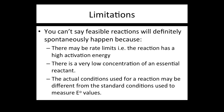The final learning intention is to explain the limitations of predictions regarding whether or not a reaction is spontaneous. We have said that if the standard cell potential is positive then the reaction is spontaneous; however, in practice this may not be true. There may be rate limits — for example, the reaction has a high activation energy — or there may be a very low concentration of an essential reactant, or the actual conditions used may differ from the standard conditions used to measure the standard electrode potential values.